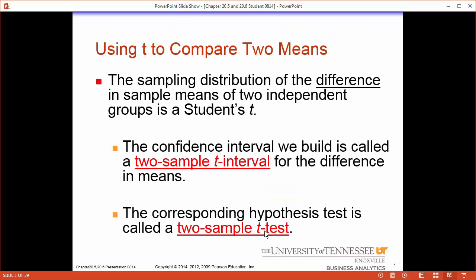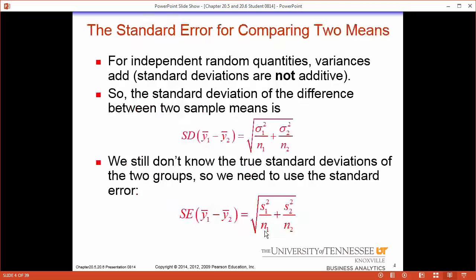We'll be using the t distribution to make comparisons here. Just like with a one sample t test we will be doing a two sample t test and a two sample t interval. I always say sigma-z, s-and-t: when you have sigma you would use z, when you have s you would use t. In most cases you will not know the true standard deviation so you'll be using the t distribution.